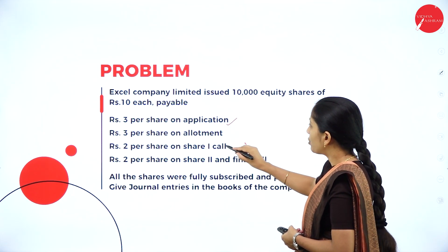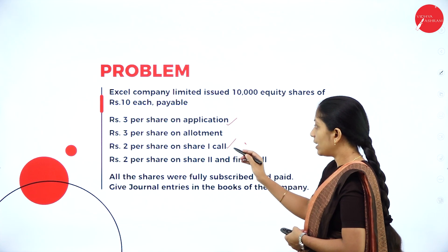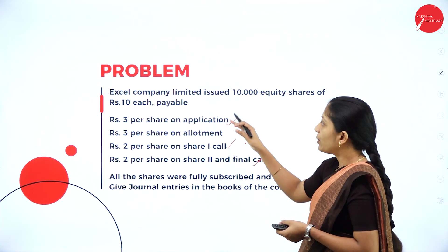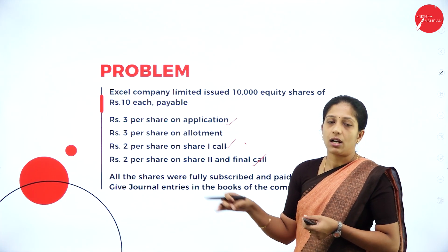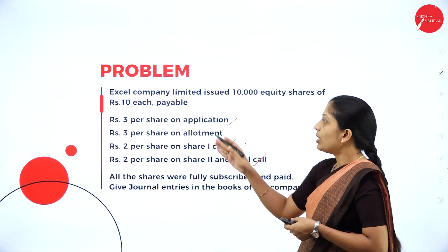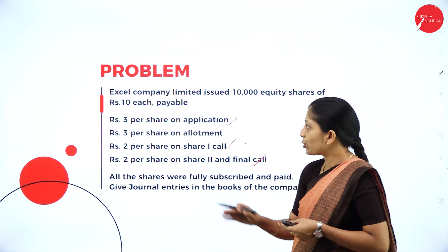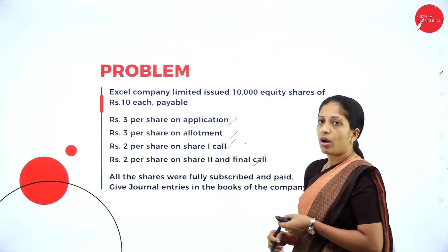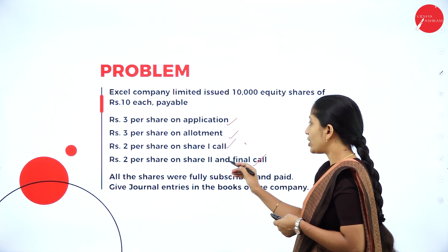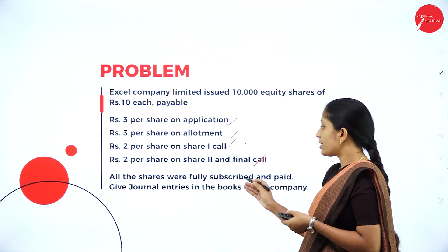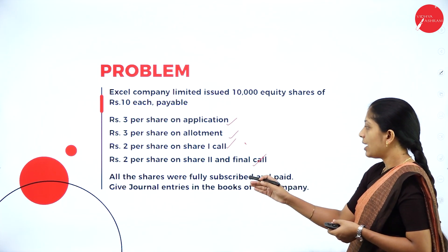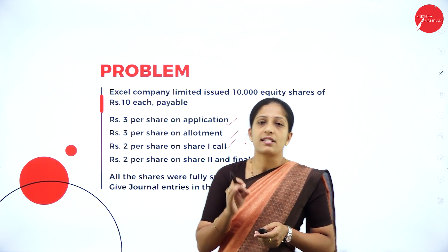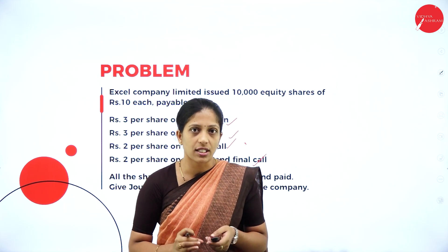The amount is payable as: ₹3 on application, ₹3 on allotment, ₹2 on first and final call, and ₹2 on second and final call — totalling ₹10 per share. All the shares were fully subscribed and paid. You have to give journal entries in the books of the company. This is a simple problem where you record journal entries; under each stage you record two entries.